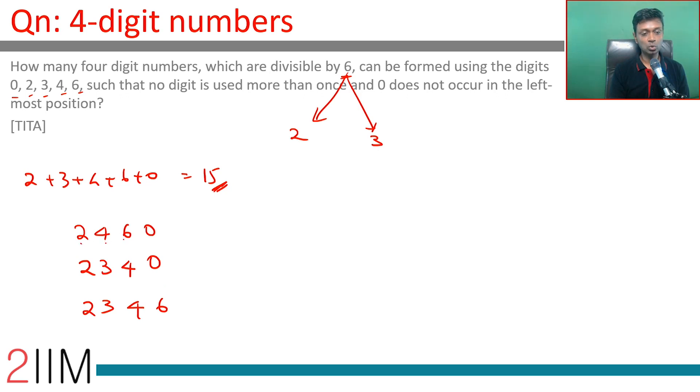So the digits could be 2, 4, 6 and 0; 2, 3, 4 and 0; 2, 3, 4, 6. All of these are possible.